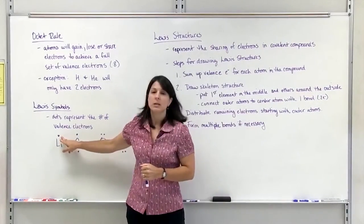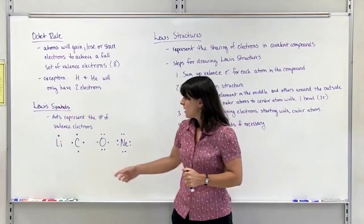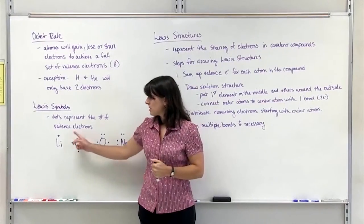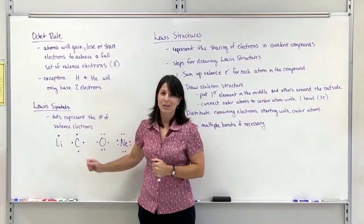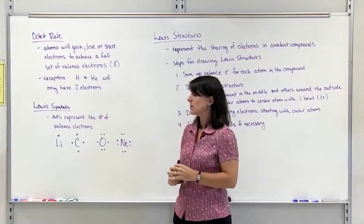Lithium only has 1 valence electron because it's in group 1A on the periodic table. Carbon has 4 valence electrons. It's in group 4A, so the group number when it's a representative element tells you how many valence electrons it has.